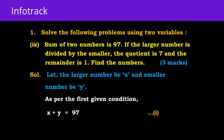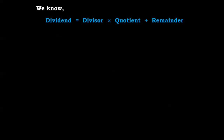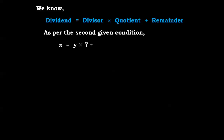The larger number is divided by the smaller. We can use the formula: dividend = divisor × quotient + remainder. So dividend is x, divisor is y, quotient is 7, remainder is 1. Therefore x = 7y + 1, so x - 7y = 1, equation number two.